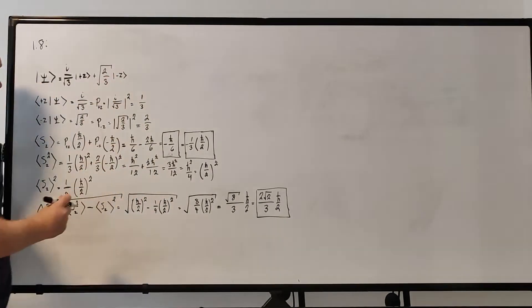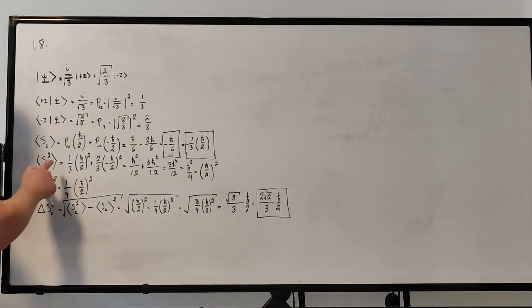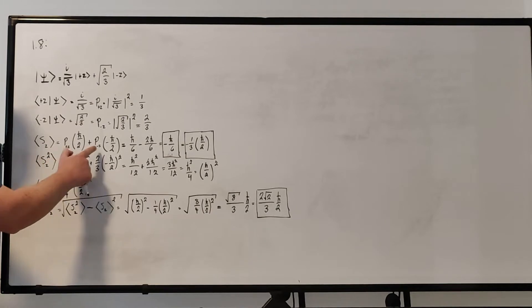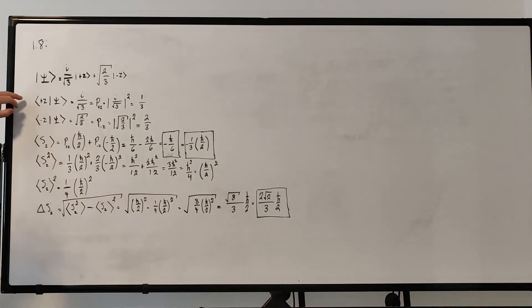Given this state here, we have i over root 3 times |+z⟩ plus square root of 2 over 3 times |−z⟩. Now, if we want to find the expectation value, we're going to need to find the probabilities of measuring |+z⟩ and the probability of measuring |−z⟩. So we need to calculate these inner products.